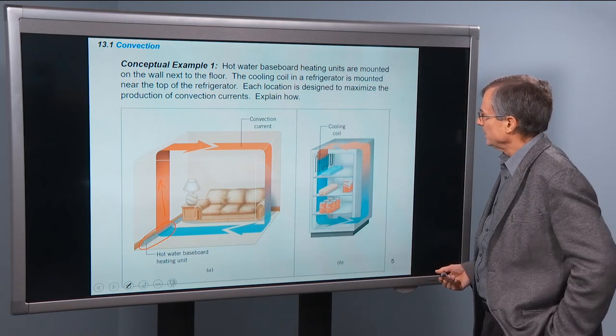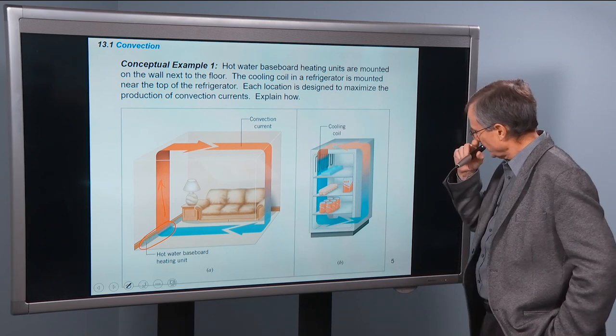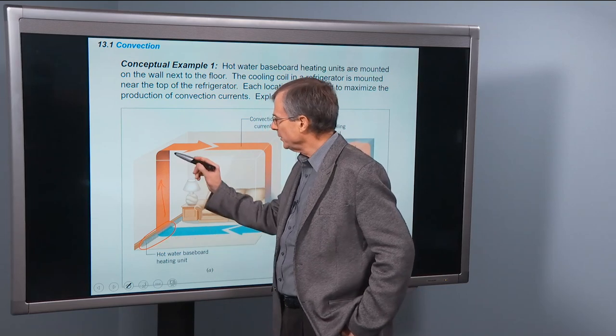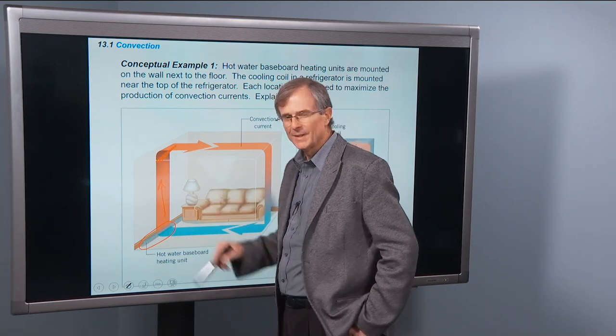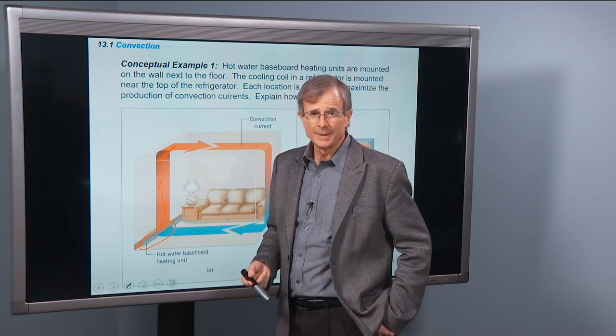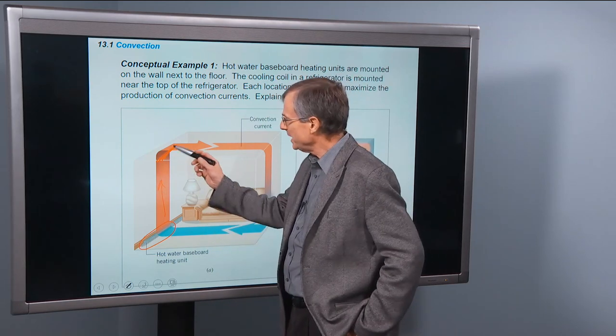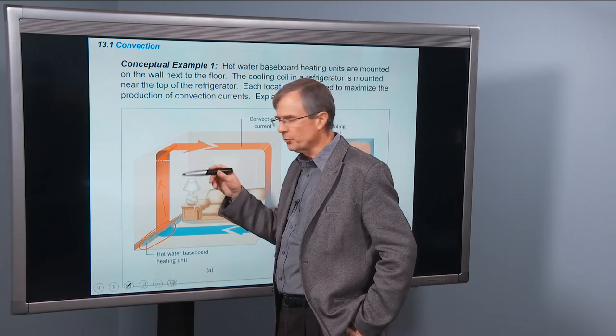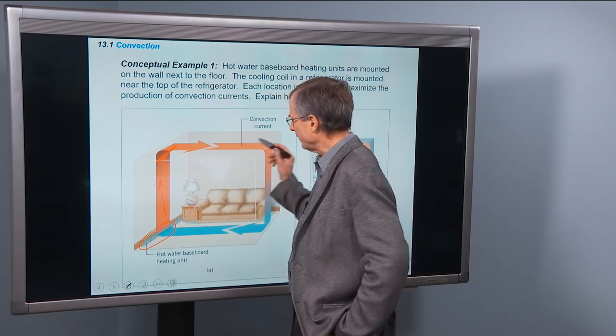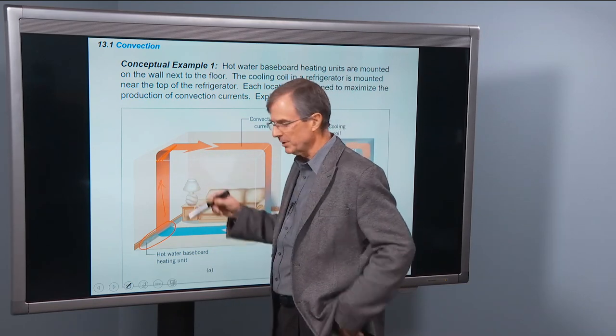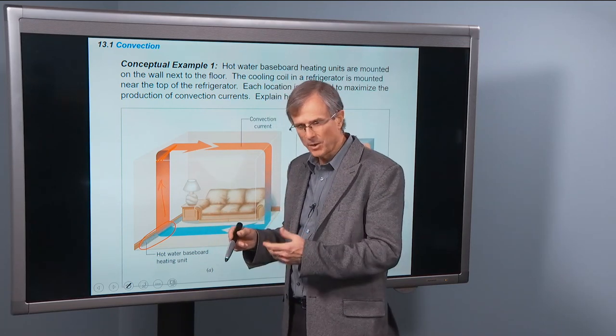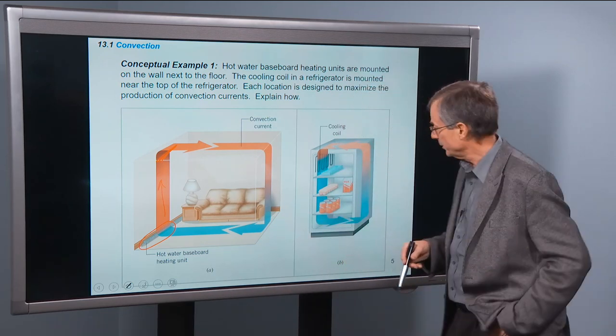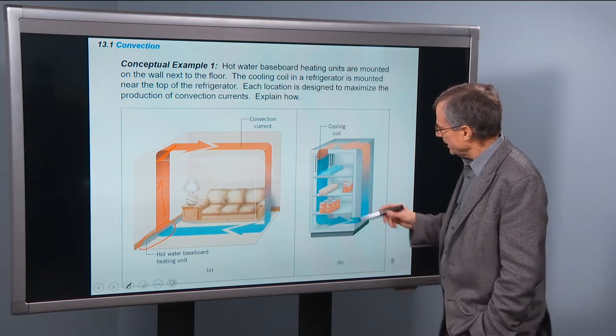So what about the cooling units on a fridge? Well you want, and here would be the problem. If we were to put this heating unit up here, then what would happen? It would be embarrassing. You'd heat up this air up here, it wouldn't have any place to rise to. You wouldn't drive any convection. It would just have a hot air region up here, unless you open the door or something, put a fan on. You're not going to get circulation, which is what you want for your house.